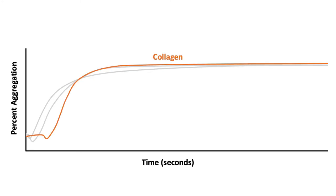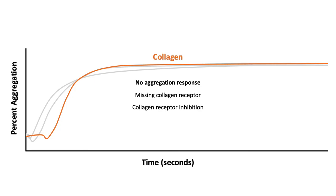Another agonist is collagen. Collagen induces platelets to release their granular contents, thereby promoting aggregation. If there is no aggregation response to collagen, it may suggest a missing collagen receptor, collagen receptor inhibition, or a storage pool defect if there is also a defect in the secondary response to ADP.